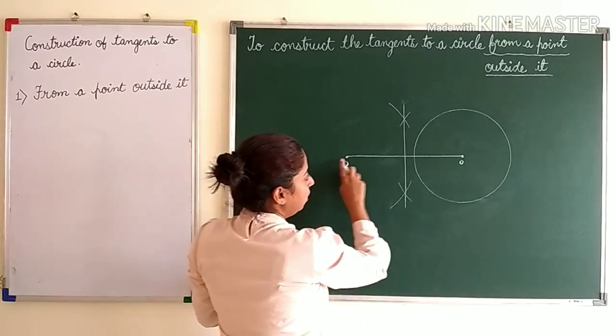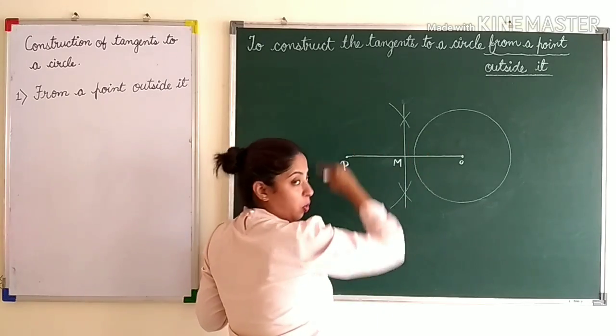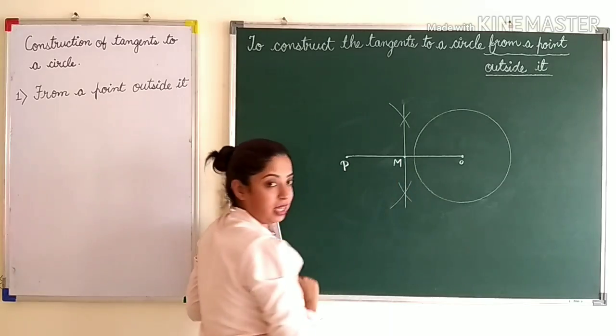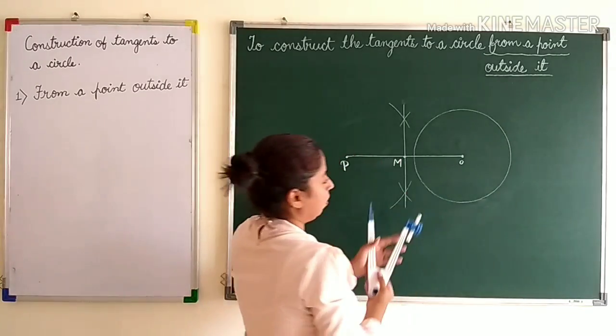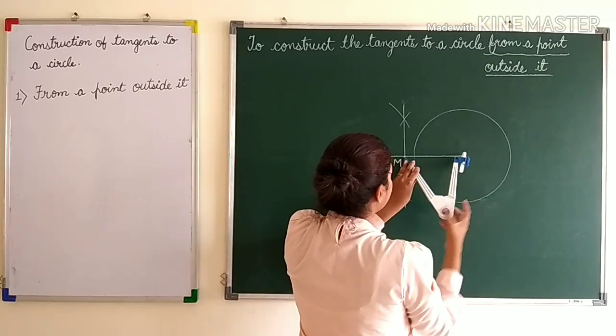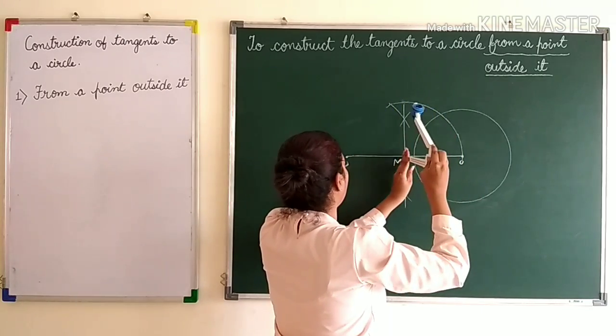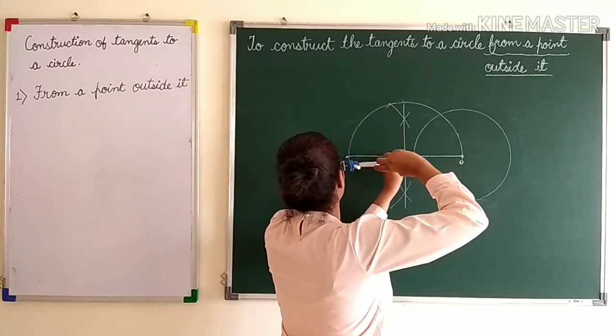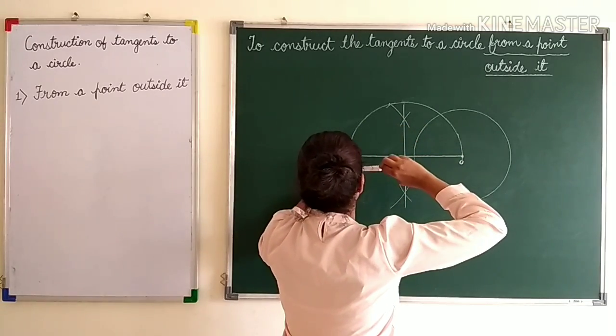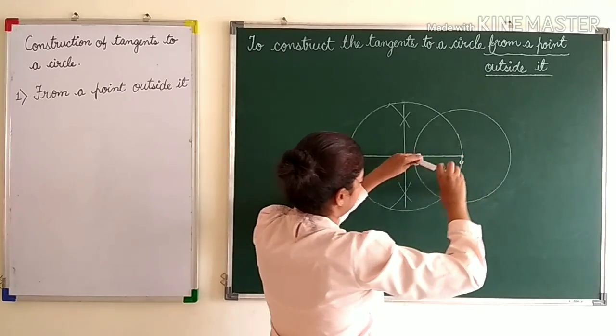So this is the required bisector. If I name it as M. Now we will draw one more circle taking M as the center and MO or PM as the radius, because both are equal. Now take this, keeping it at M and taking OM as the radius, we draw one more circle. Make sure that when you are drawing it, this passes exactly through P. So this is the required circle.